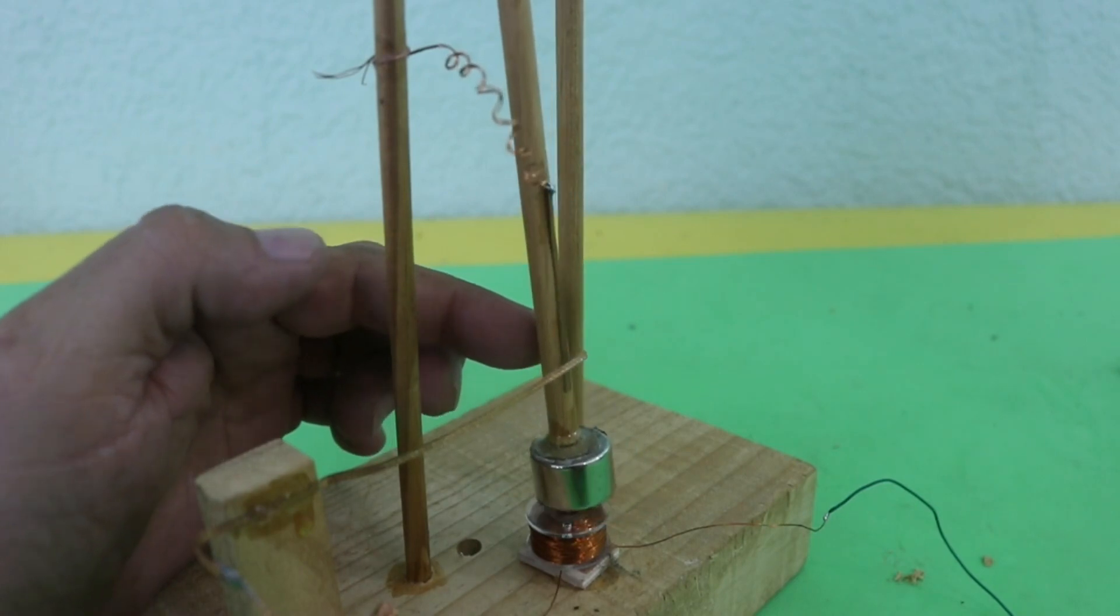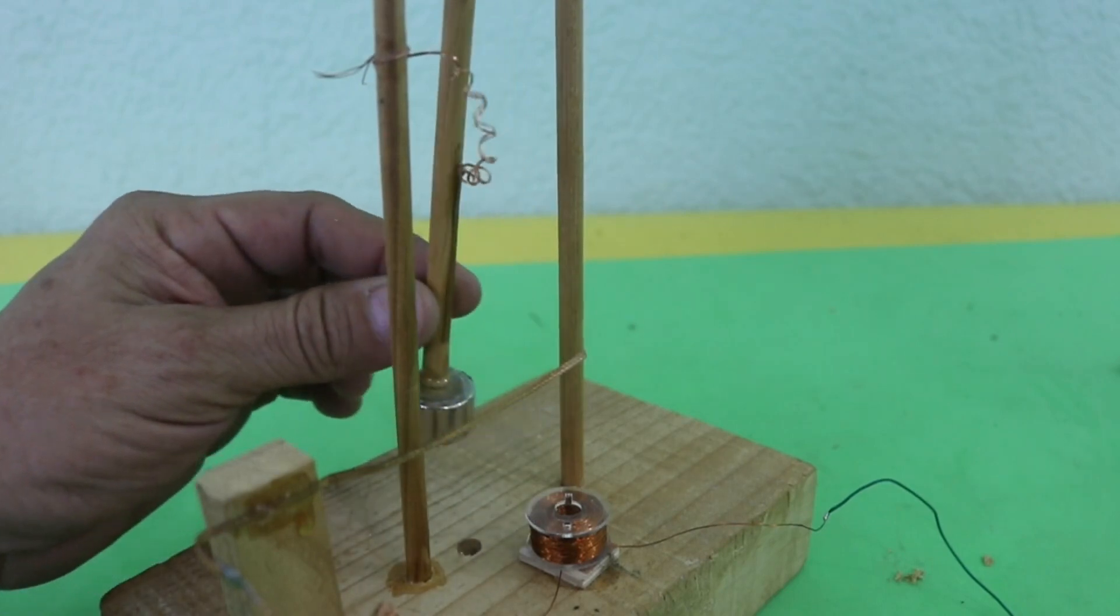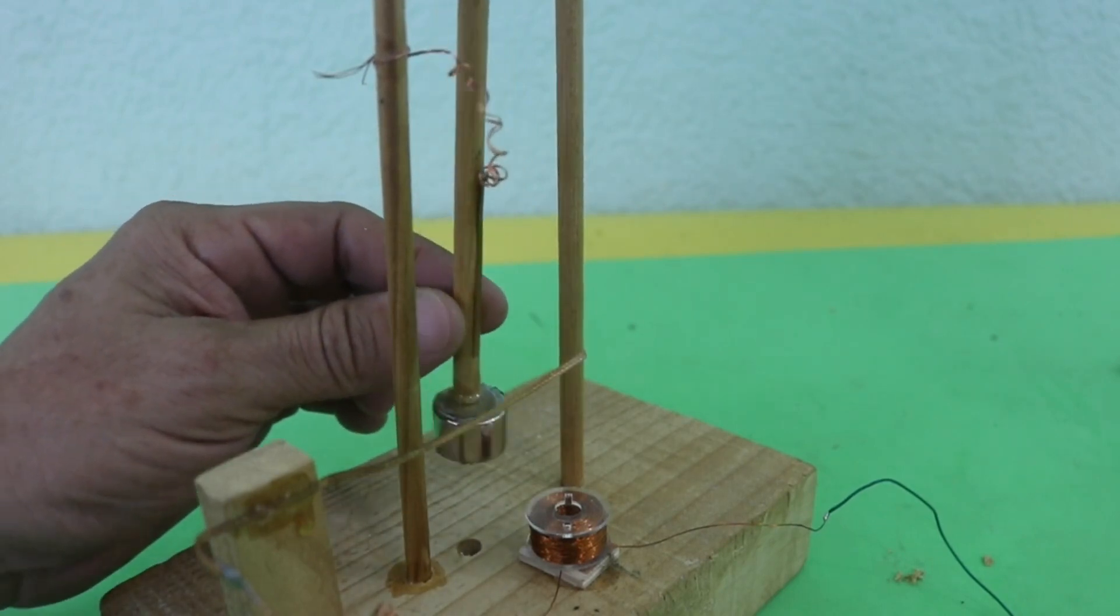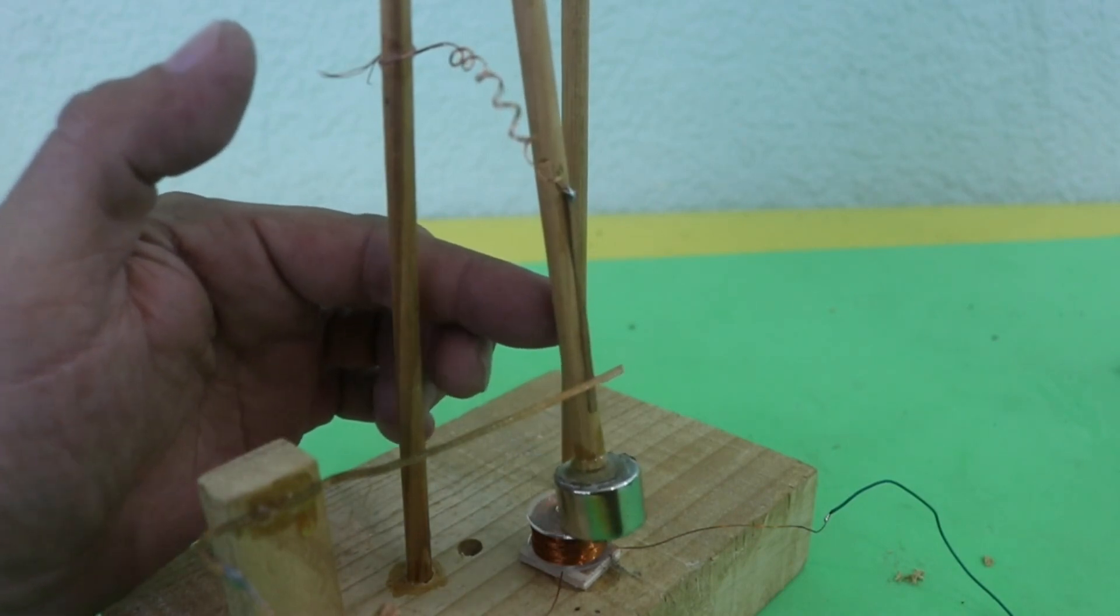Then, the magnet goes back because of its inertia. The coil is disconnected. And then, the pendulum returns, makes contact and receives another push.